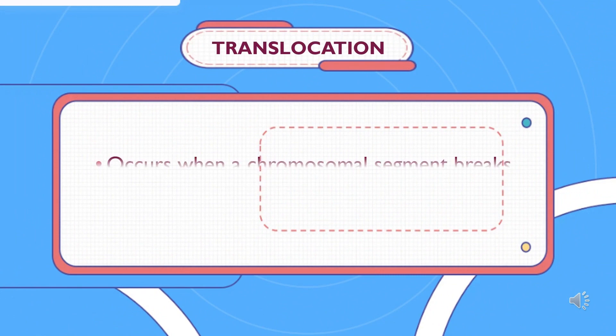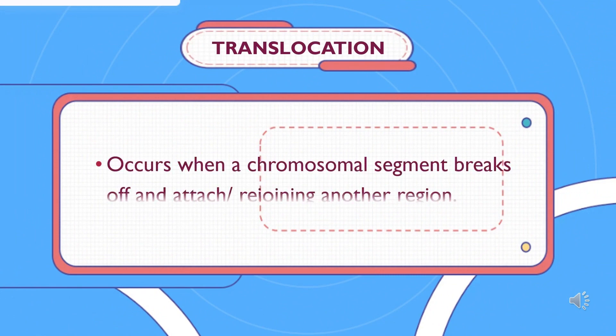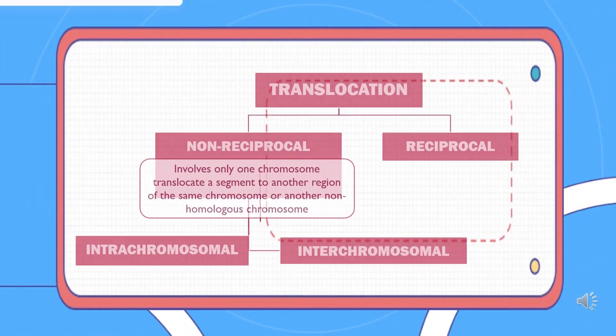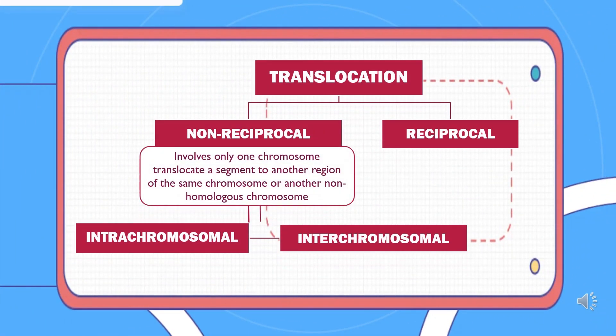Translocation occurs when a chromosomal segment breaks off and attaches to another region of the chromosome. Translocation can be divided into two types: non-reciprocal and reciprocal.